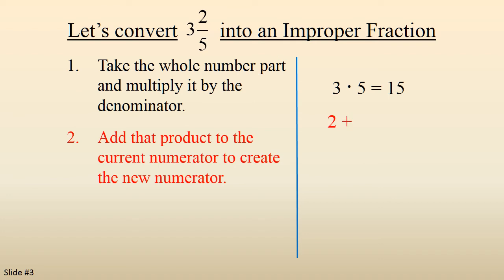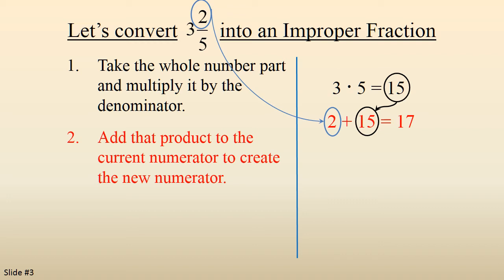We take the 15 and we add it to the current numerator. So 2 plus 15 gives us 17. That becomes the new numerator.